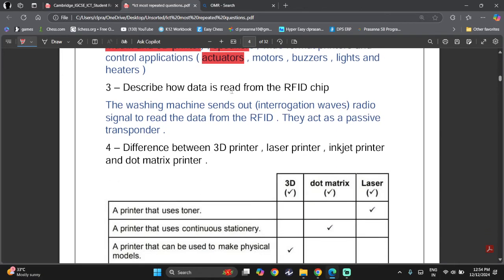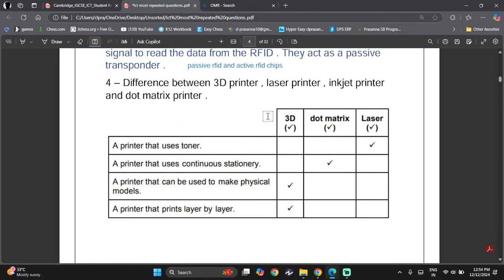Then they ask, how is data read from an RFID chip? The washing machine, okay. So now they have used a specific scenario here. The washing machine sends out interrogative waves or radio signal to read the data from the RFID. They act as a passive transponder. Now for RFID, we have two types of the way they are powered. Either passive, we have passive RFID chips, and we have active RFID chips. I'll make a separate video on how RFID works. So don't stress life for now.